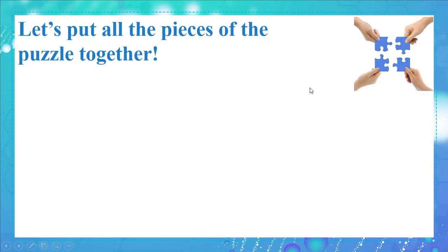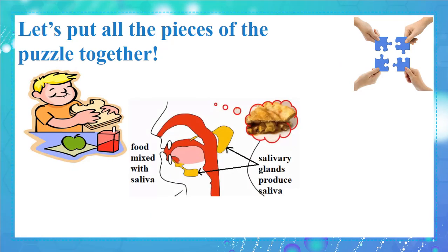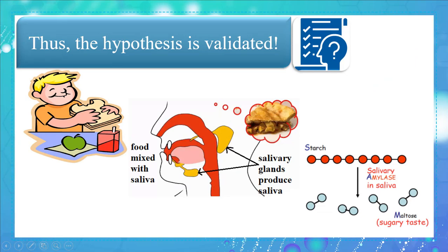Let's put all the pieces of the puzzle together. When this boy was eating bread, the bread in his mouth mixed with saliva. The salivary amylase in saliva broke down the big starch molecules in bread into smaller molecules called maltose. Maltose is a reducing sugar, and that's why the boy felt a slight sweet taste. Thus, the hypothesis is validated.